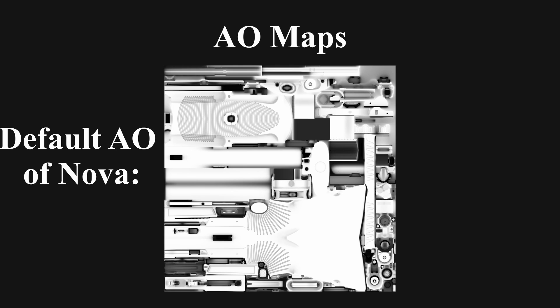In CS2 we can use AO maps in order to make some areas darker. Also, in some cases where the default AO maps provided by Valve have darker values that affect your skin, you can override the AO map with a solid white colored image and that would fix it for you. For this tutorial, I will not create AO maps and will focus on the albedo, normal and roughness maps.